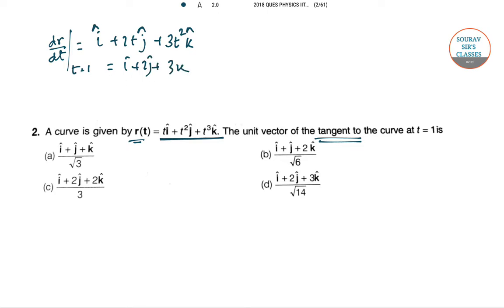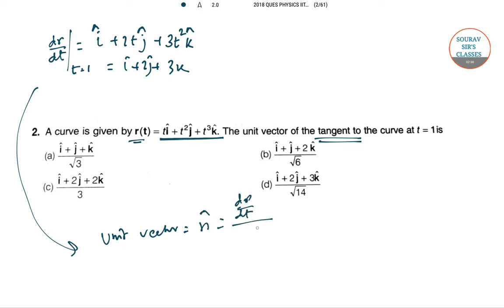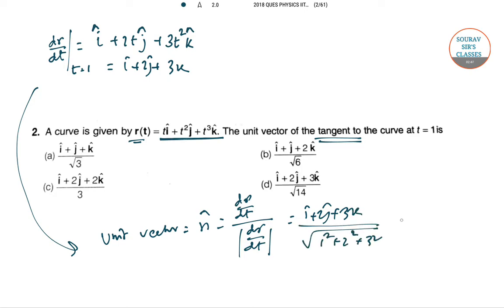The unit tangent vector at t equal to 1 equals dr/dt divided by the modulus of dr/dt, which gives (i plus 2j plus 3k) divided by √(1² + 2² + 3²) equals (i plus 2j plus 3k)/√14. So the answer is option D.